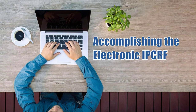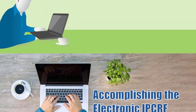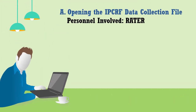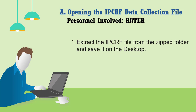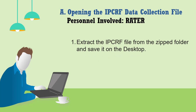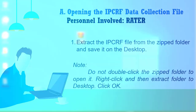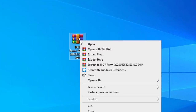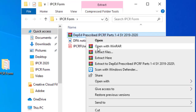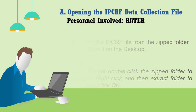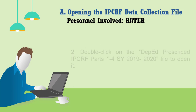Steps in accomplishing the electronic IPCRF. Step 1: Extract the IPCRF file from the zipped folder and save it on the desktop. Do not double-click the zipped folder to open it. Right-click and then extract the folder to the desktop, then click OK. Step 2: Double-click on the Department of Education prescribed IPCRF Parts 1–4, School Year 2019–2020 file to open it.